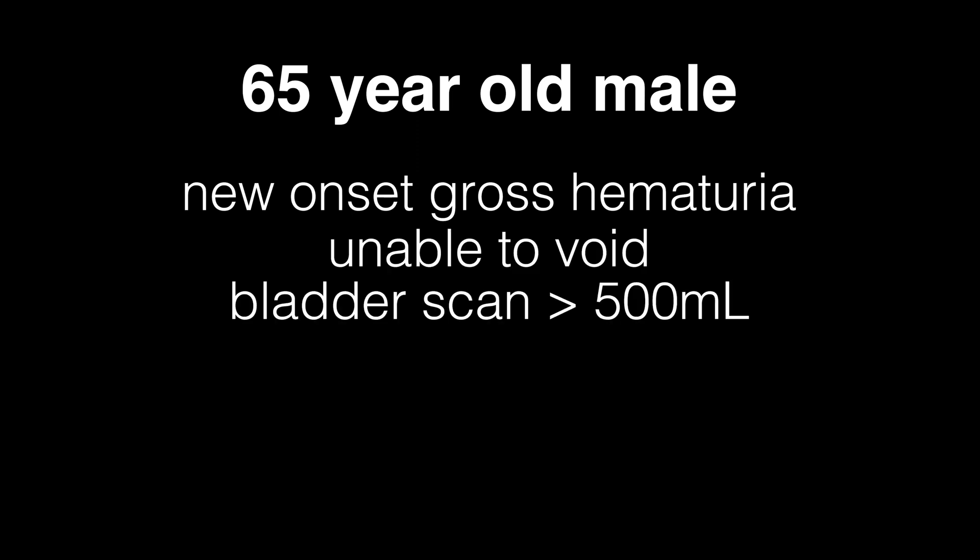So why don't we start off with a case presentation. Today's case, we have a 65-year-old male gentleman who is currently an everyday smoker who has an abrupt onset of gross hematuria, inability to void, and a bladder scan greater than 500. He tells us he has been urinating blood clots for the last few days and has seen blood off and on in his urine for the last few weeks.